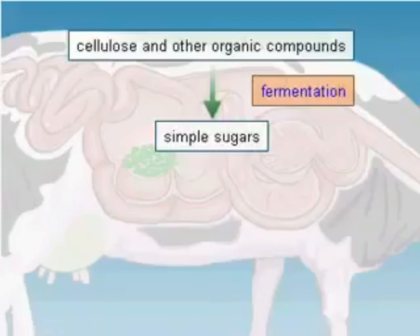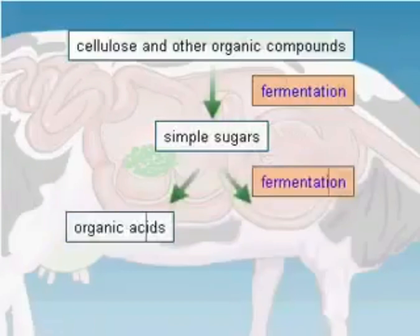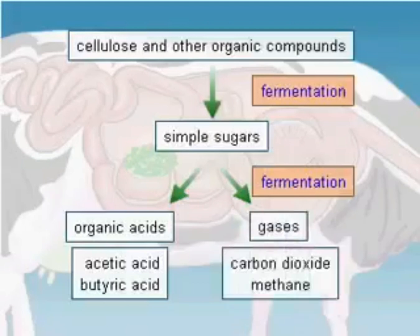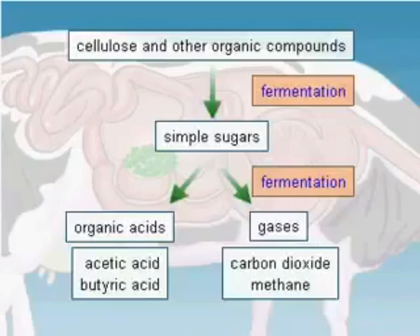These in turn are transformed into organic acids such as acetic acid and butyric acid, and gases such as carbon dioxide and methane. Gases escape through the oesophagus and the mouth by belching, while organic acids are absorbed into the blood and used by the cells of the organism as energy and structural materials.